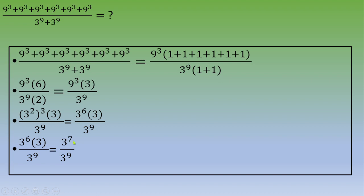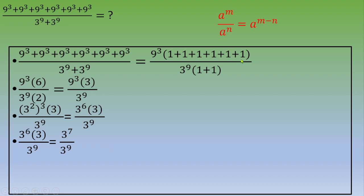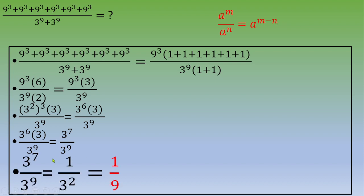So we end up with 3 to the power 7 over 3 to the power 9. Applying the division rule for same-base powers, we get 1 over 3 squared, which equals 1 over 9. So the final answer is 1 over 9.